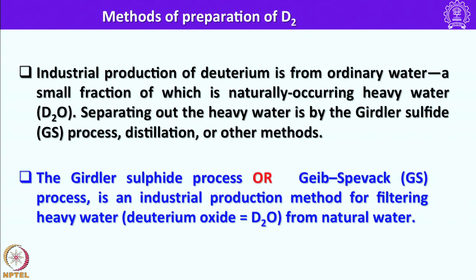The Gibbs-Pavik process is an industrial production method for filtering heavy water from natural water. Several compounds can be made using D2O as the major source; using D2O, several other deuterium compounds have been synthesized.